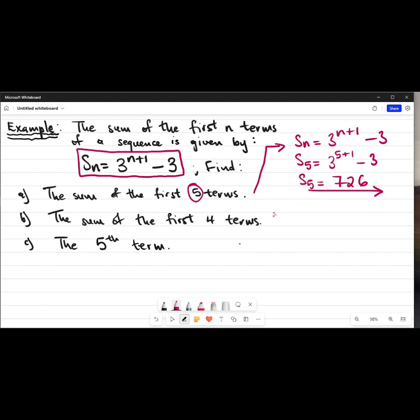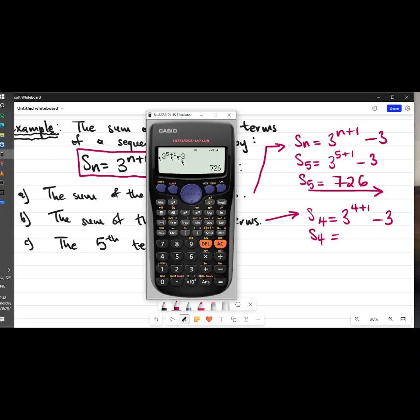Question b says the sum of the first 4 terms. Now if you notice, the question is the same as the previous one, just that now we're looking for first 4 terms. So in the place of n I put 4: 3^(4+1) - 3. And then let's see the answer that we're going to get. So I just go straight to calculator. Now I'm going to replace 5 with 4, then I get 240.